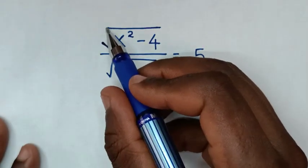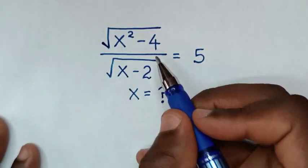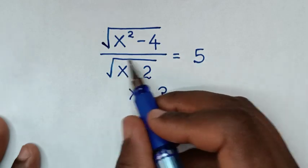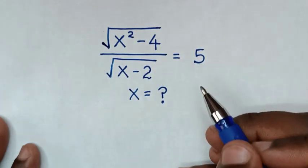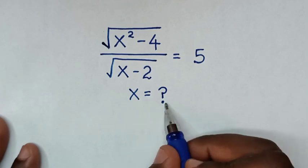Hello, how to solve square root of x square minus 4 over square root of x minus 2 is equal to 5 to find the value of x from this equation.